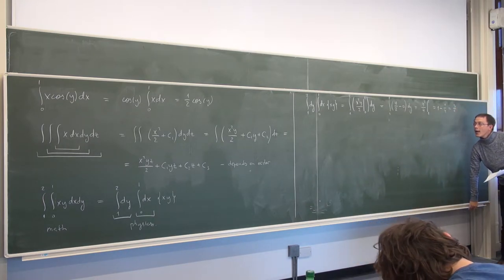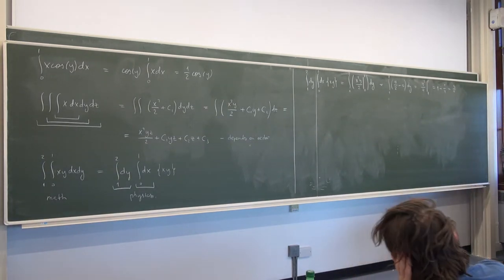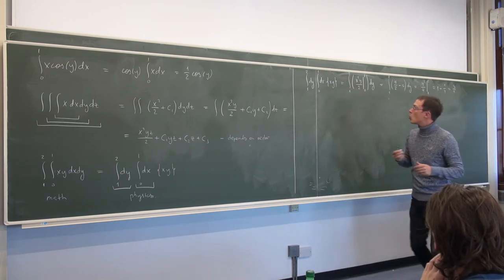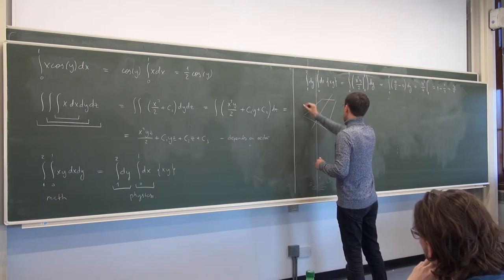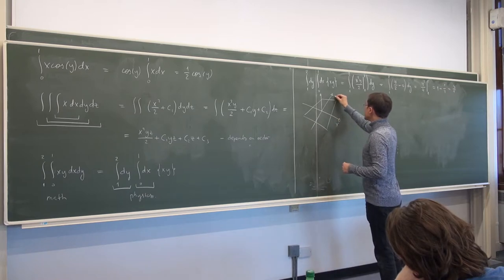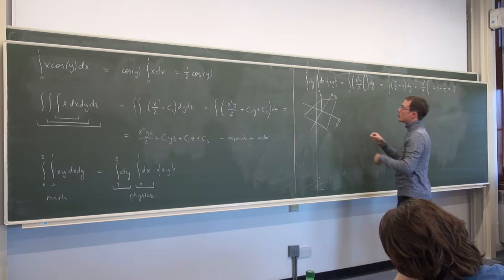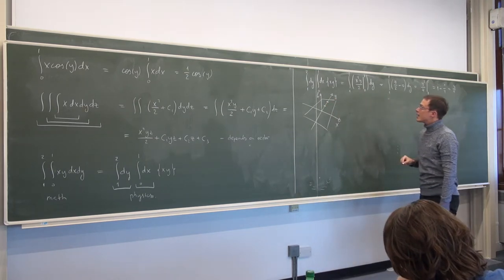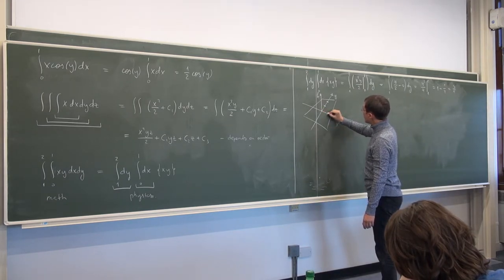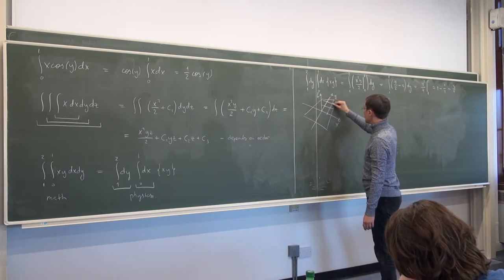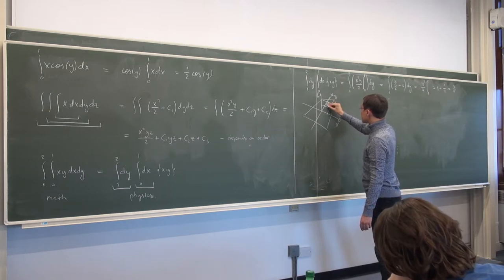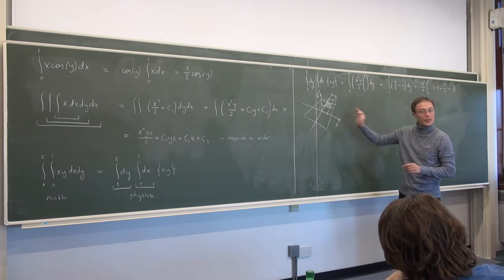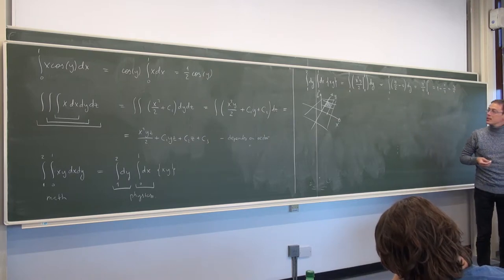This is the case where the limits are explicit numbers. The region of integration for this is a square in the x-y plane. There is some kind of surface over it, and the integral gives the volume that the surface makes with the x-y plane.